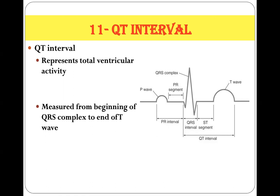Hello and welcome back. In this video, we'll discuss the 11th code of our 12 codes for ECG interpretation, which is the QT interval. As we have mentioned, the QT interval represents the total ventricular activity — depolarization plus repolarization. It is measured from the beginning of the QRS complex to the end of the T-wave.